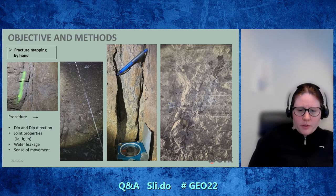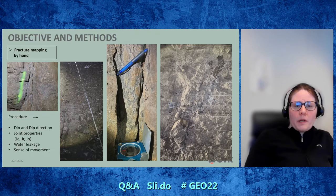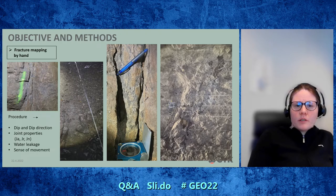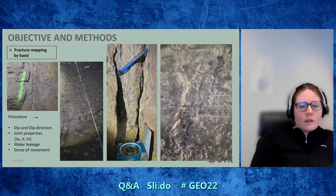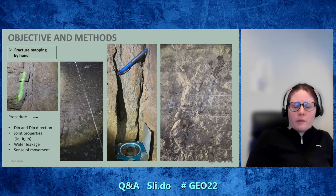What else we did in the tunnel: one group did photo shooting and one group did fracture mapping with a hand compass. We first walked through the tunnel and marked the faces we wanted to measure concerning faults, joints, and fractures. We used a long measuring tape to measure distance from the tunnel opening to localize measurements. We took dip and dip direction, joint properties like alteration, roughness, and RQD. We also noted water leakages — whether there were moist surfaces — and in some cases we were able to see the sense of movement.